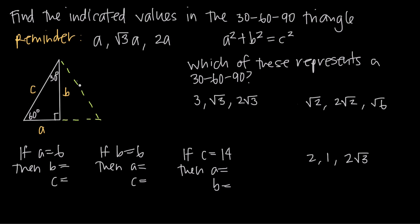So we have an equilateral triangle where the lengths of all three sides are the same. When that's the case, what we end up with is a special relationship between the lengths of the three sides of half of that equilateral triangle — the 30-60-90 triangle.